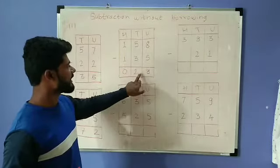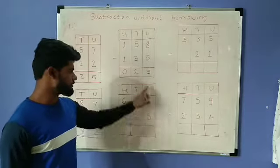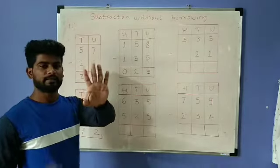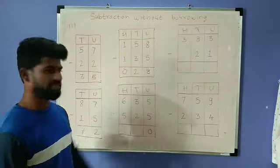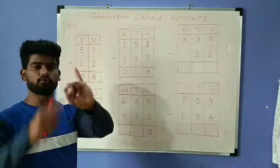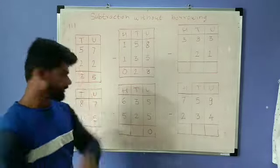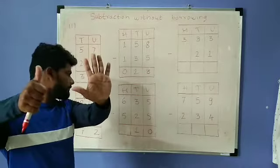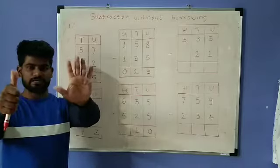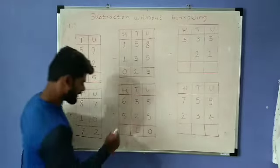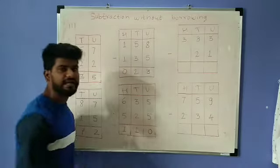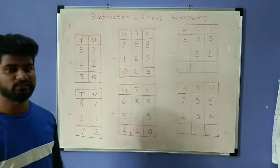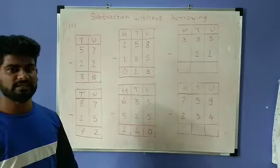Next: 635 minus 525. First, units place: 5 minus 5. We had 5, from this subtract 5. What remains? 0. Now next: 3 minus 2. We have 3, minus 2: 1, 2. Remaining is 1. Now next: 6 minus 5. We have 6, from this subtract 5. What remains? 1. So our answer is 110. Remember this in subtraction.